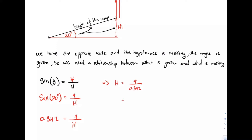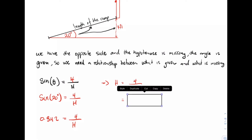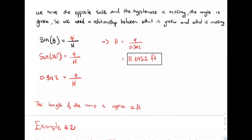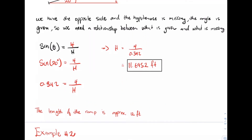Plugging this into the calculator, I end up with 11.6952. This is in feet since we have the dimension for our units. So the length of the ramp is approximately 12 feet.